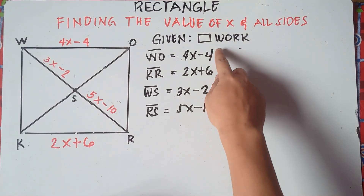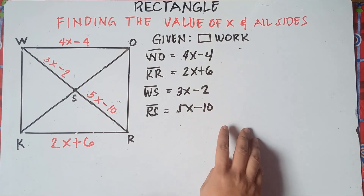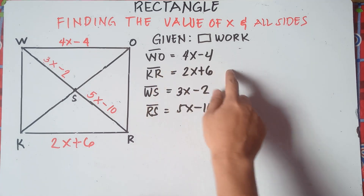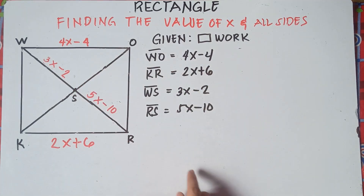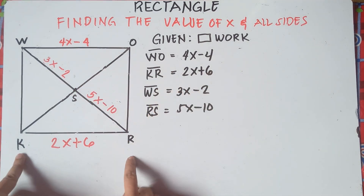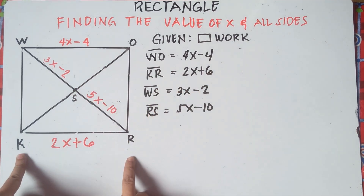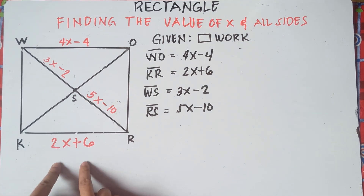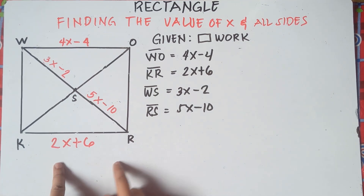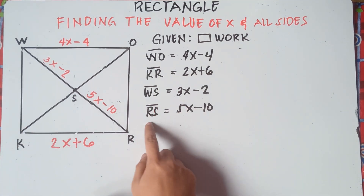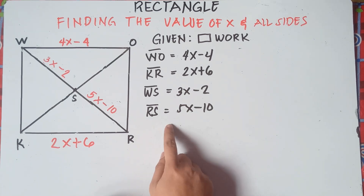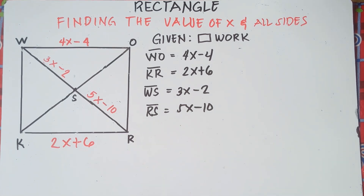Given rectangle WOKR: WO is equals to 4x minus 4, KR is 2x plus 6, WS is 3x minus 2, and SR is equals to 5x minus 10.